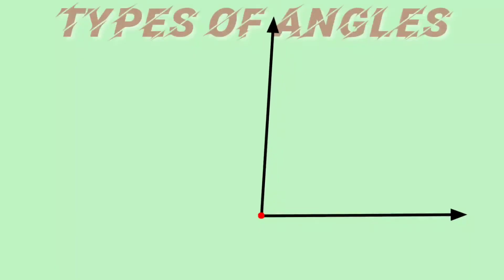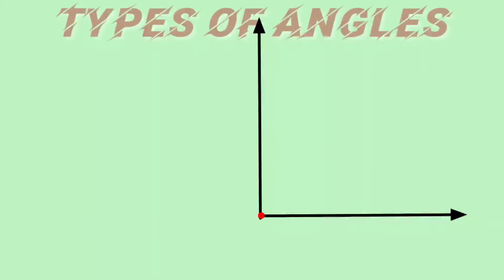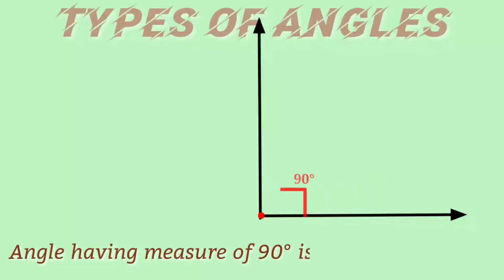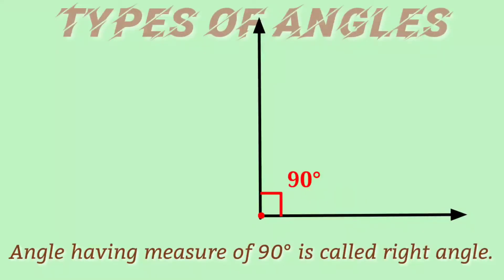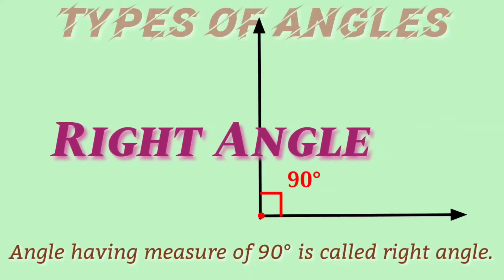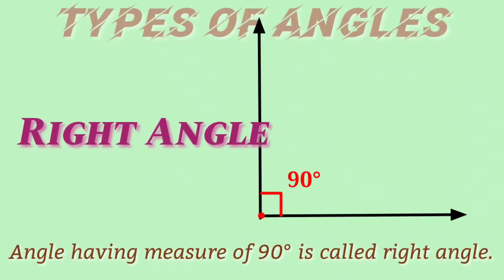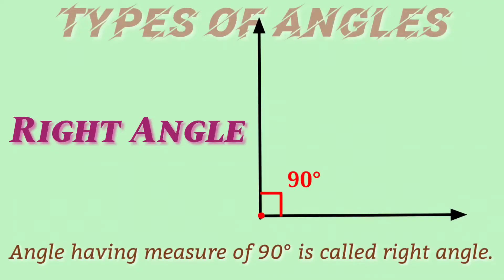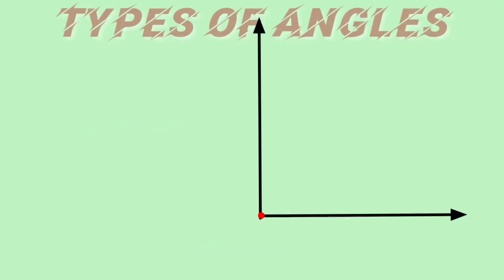When the second arrow is perfectly perpendicular — that is, in a completely vertical position — then the angle between the two arrows is 90 degrees. A 90-degree angle is called a right angle. So the measure of a right angle is 90 degrees.